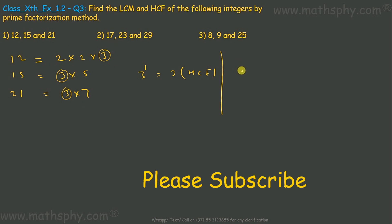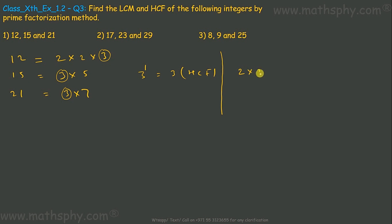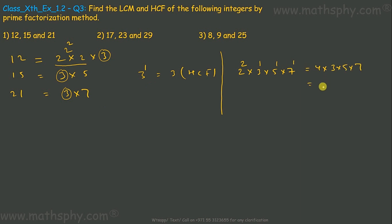Now let's find the LCM. For LCM we take all the prime factors: 2, 3, 5, and 7. The greatest power of 2 is 2 squared, 3 has highest power 1, 5 has power 1, and 7 has power 1. So LCM = 2² × 3 × 5 × 7 = 420.